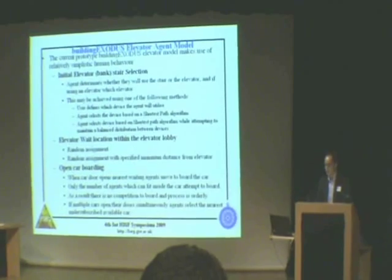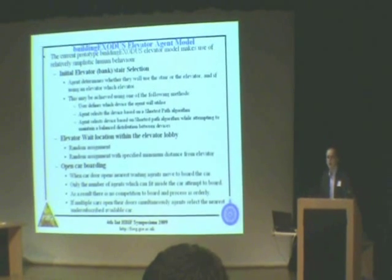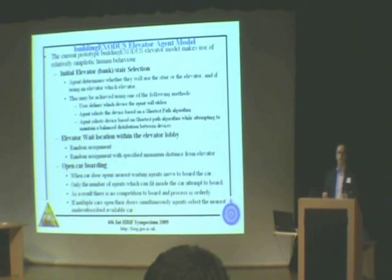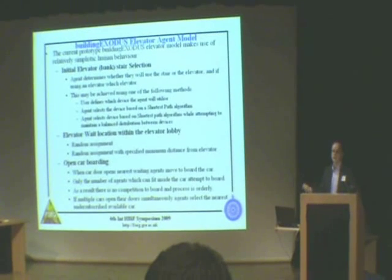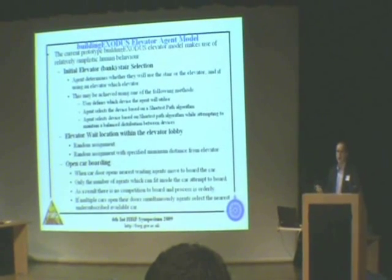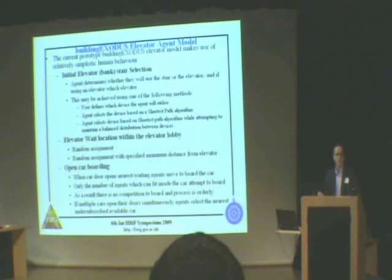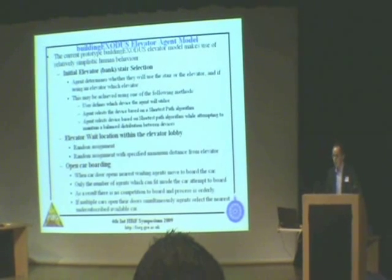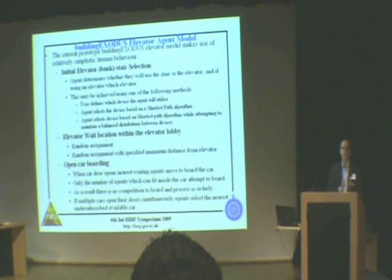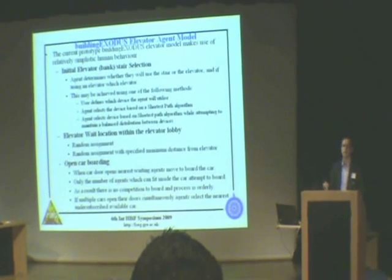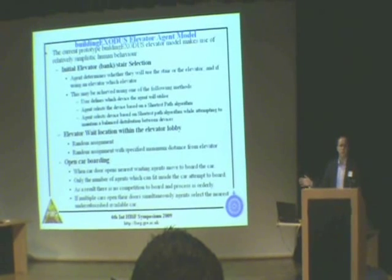The second type of behavior we need to represent is the wait location — when agents elect to use an elevator, they go to the elevator wait area and have to choose a place to wait. It might appear trivial, but it also determines what elevator you might use and could affect how long your evacuation takes. Since we don't understand how people perform these tasks, we have two methods: agents either select a random location to wait, or they select a random location based on a minimum distance from the elevator, representing people who want to keep their choices open before committing to one elevator.